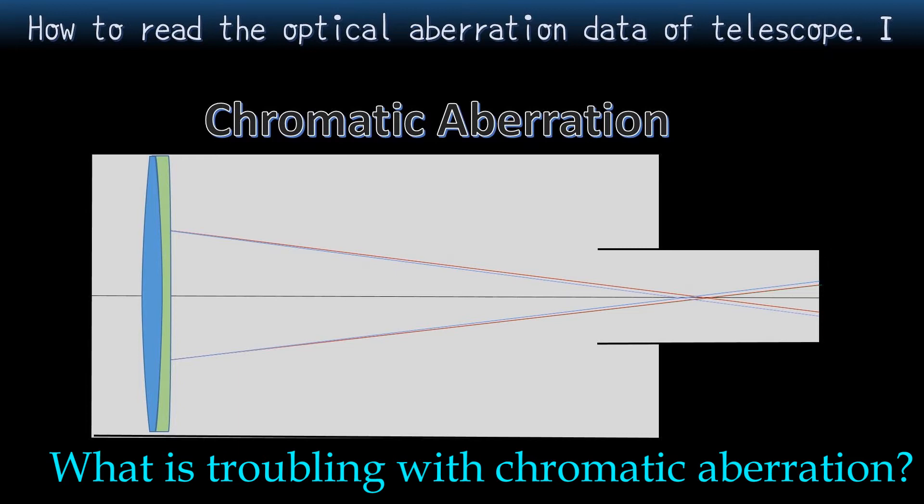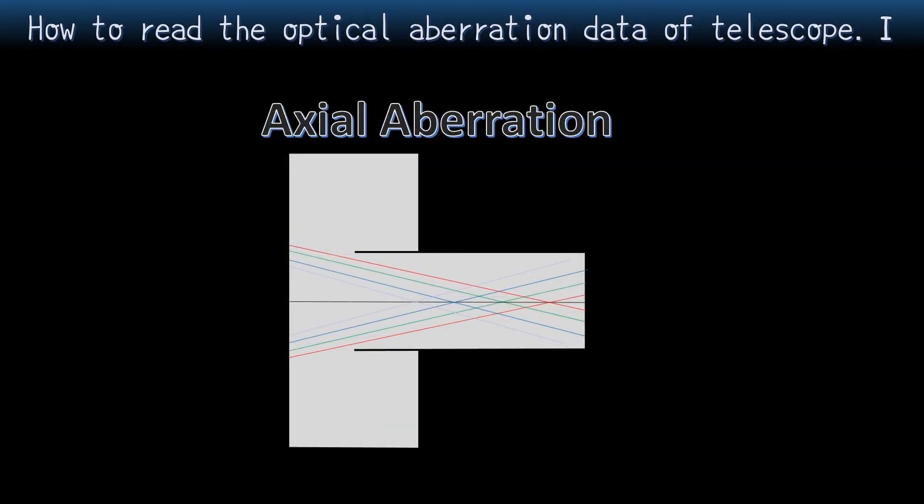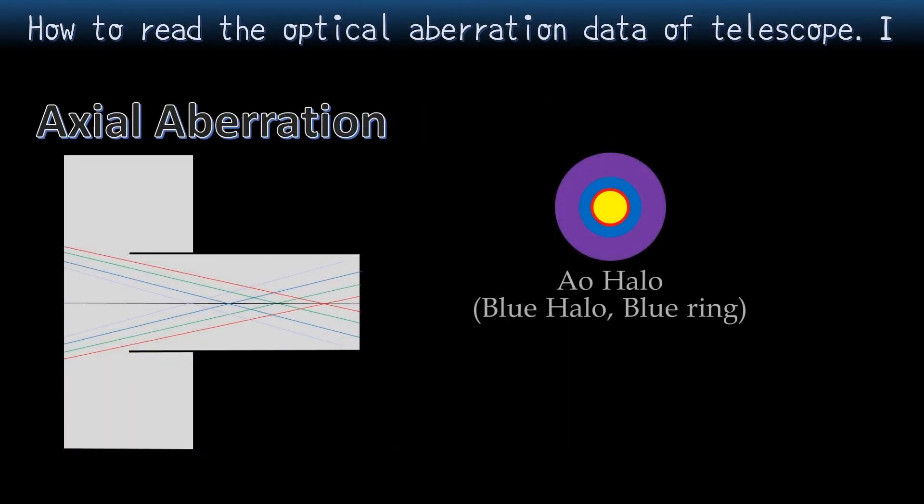First one, axial aberration is most disliked by us. Actually, the focal point is different for each wavelength. If we focus on the most visible wavelength, other colors are out of focus. Especially the blue or purple is not in focus. In Japan we call this Aoharo. Aoharo means blue rings.